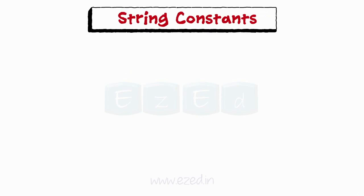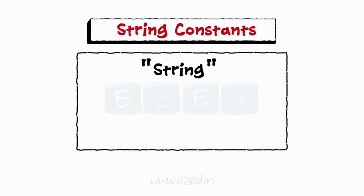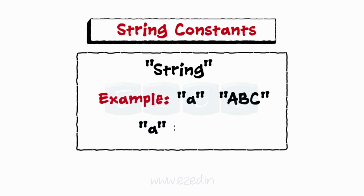Let's move on to string constants. The sequence of characters enclosed in double quotation marks is termed as string constants. Examples are "a", "abc". Here, this "a" is not equal to character 'a'.